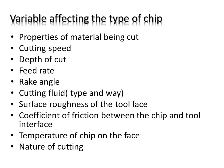The factors affecting chip formation include: the material being cut and cutting speed, depth of cut, feed rate, rake angle, cutting fluid, surface roughness of the tool face, coefficient of friction between the chip and tool interface, temperature of the chip on the face, and the nature of cutting.